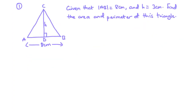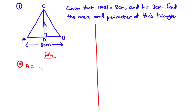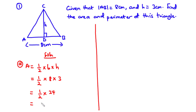Now let's take an example. Given that AB is 8 centimeters and H is 3 centimeters, find the area and perimeter of this triangle. The area of a triangle is given by half times the base times the height. We have the base to be 8 centimeters and the height to be 3 centimeters. So this becomes half of 8 times 3, which is 24, and then half of 24 is 12. So the area of the triangle is 12 centimeters squared.